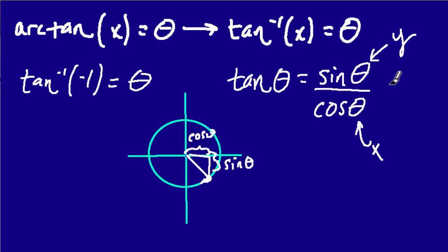Those are both distances, and the sine of theta, that's the distance of y. And the cosine of theta, that's the distance of x. And delta y over delta x, that's just slope. So the tangent of theta, you can think of it as slope of a line in a unit circle.